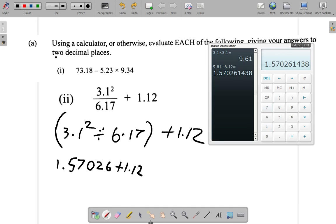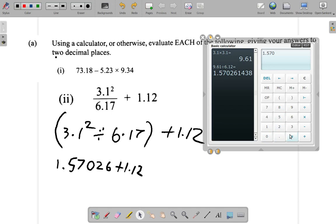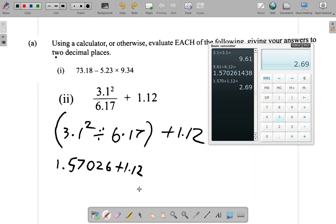So what I have here now is—let me clear—1.570 plus 1.12, and that gives me 2.69, and it's to two decimal places. So the answer here is 2.69.